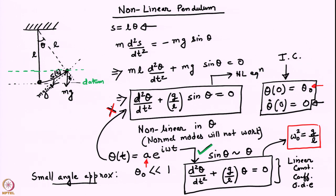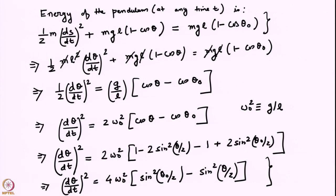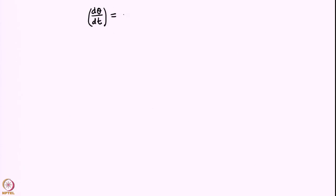Let us look at the solution to the exact problem without linearization and learn about the features of the non-linear problem. We started by looking at the energy of the pendulum, equating the instantaneous energy to the initial energy. The initial energy is purely potential energy, and after some algebraic manipulations, this led us to a first-order equation. This is already a first-order equation because we started with the first integral, which is the energy: dθ/dt = ±√[2ω₀²(sin²(θ₀/2) − sin²(θ/2))].